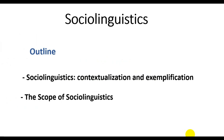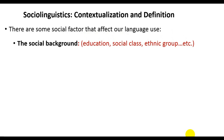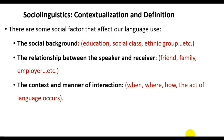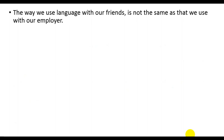I will define and present the scope of sociolinguistics. There is full agreement that there is a strong relationship between language and society, each of which is dependent on the other, as there are reciprocal effects among both entities. In other words, the language we use is strongly affected by social factors such as the social background, the relationship between the speaker and receiver, and the context and manner of interaction.